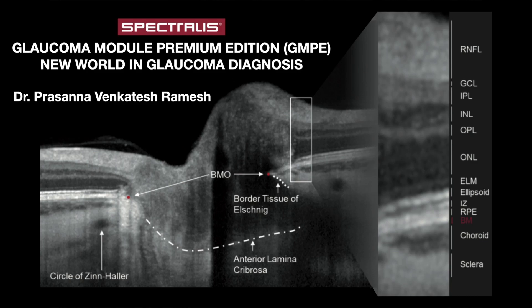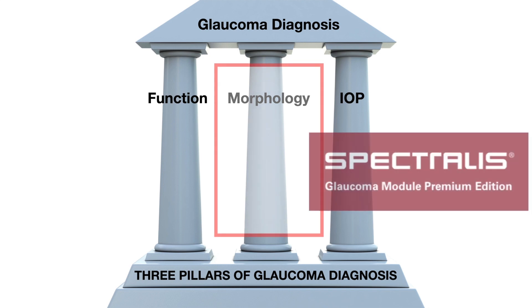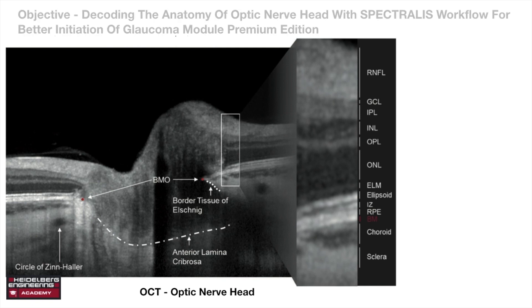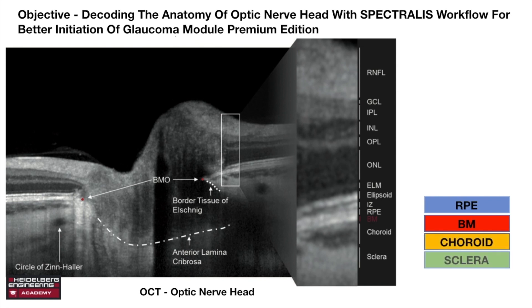Glaucoma Module Premium Edition: Bruch's Membrane Opening Minimum Rim Width — a new world in glaucoma diagnosis. No financial disclosure. The three pillars of glaucoma diagnosis are function, morphology, and intraocular pressure. This video theater focuses on morphometric assessment of the optic nerve. It has been decoded with Spectralis workflow for better initiation of the Glaucoma Module Premium Edition. Box diagrams will be used for the majority of slides, as seen on the right lower corner, to reorient the anatomical locations.